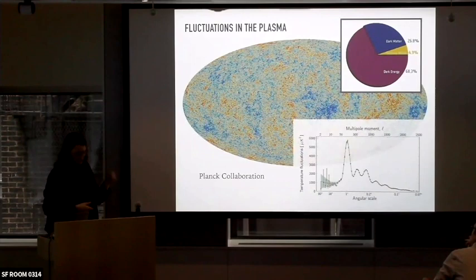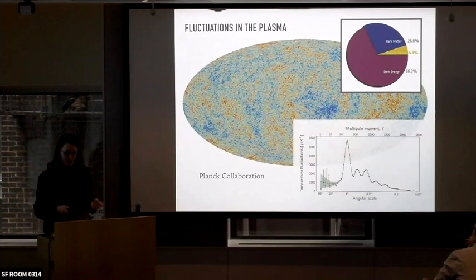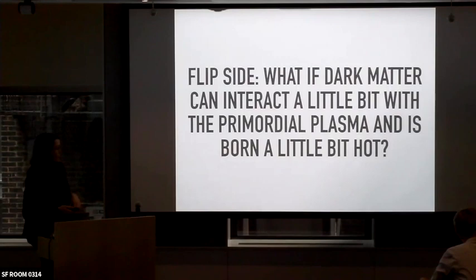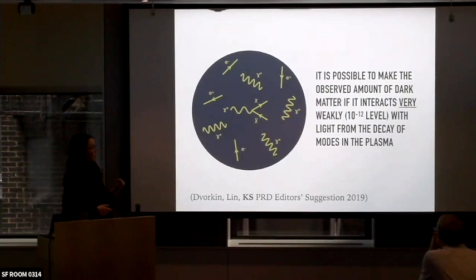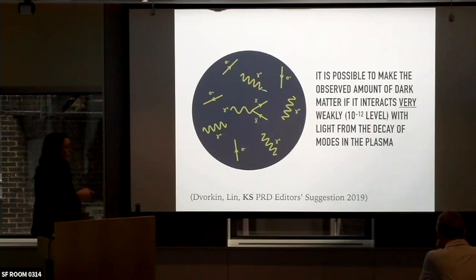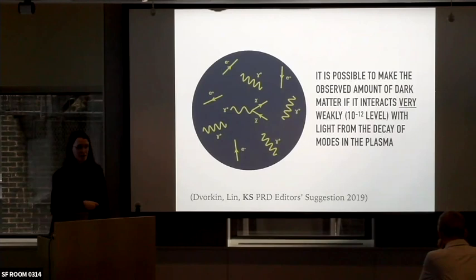Now, continuing the theme of pushing on assumptions: what if dark matter could interact just a little bit with the primordial plasma, and what if dark matter was born just a little bit hot? It turns out — me and some collaborators realized — it's possible to make the right amount of dark matter if it interacts very, very weakly with the primordial plasma at the 10⁻¹² level. The way you'd make dark matter in this situation is from the decay of modes in the plasma. Inside a plasma, a photon has an in-medium effective mass, and because it has a mass, it can decay to light weakly-coupled particles.